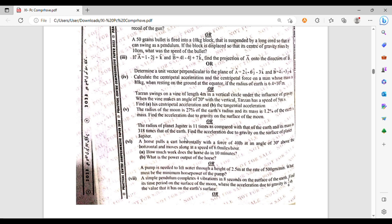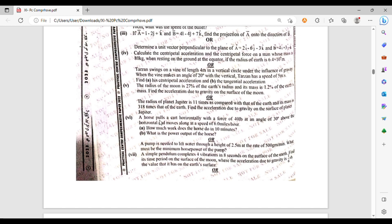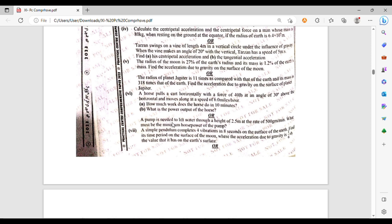Question number 6: a horse pulls a cart horizontally with a force of 14 lb at an angle of 30 degrees above the horizontal and moves along at a speed of 6 miles per hour. How much work does the horse do in 10 minutes? What is the power output of the horse? Or what pump is needed to lift water through a height of 2.5 meter at a rate of 500 gram per minute? What must be the minimum horsepower of the pump? Question number 7: a simple pendulum completes 4 vibrations in 8 seconds on the surface of the earth. What is its time period on the surface of the moon when the acceleration due to gravity is 1 upon 6th the value of that on earth's surface?